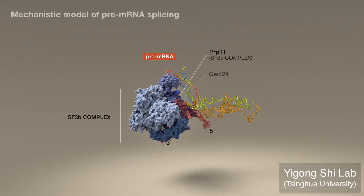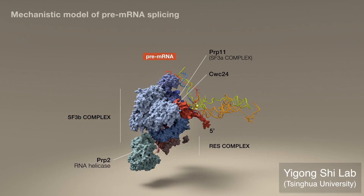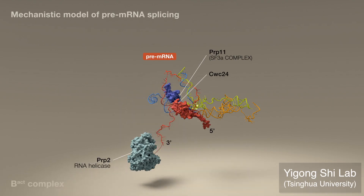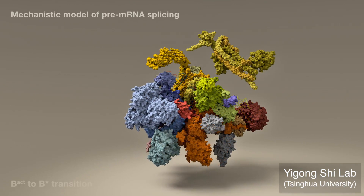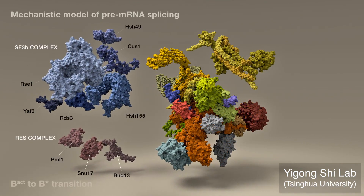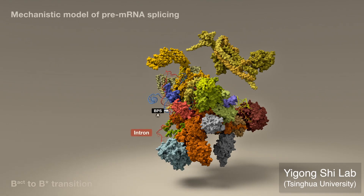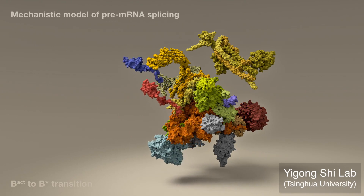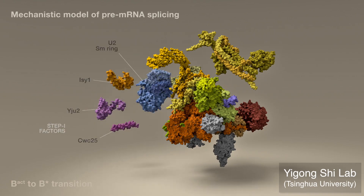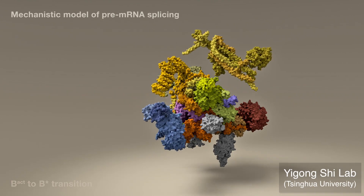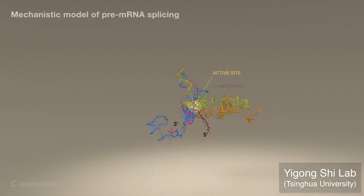Consideration of a mechanistic model of splicing suggests a sequence of events at the level of protein components. Initially, the step 1 branching reaction cannot proceed while the two reactive moieties are separated by a shielded 50-angstrom gap, a structural feature presumably tailored for alternative splicing and selection of branch sites. The RNA helicase PRP2 likely pulls the intron, triggering the release of intron-associated RES and SF3B complexes, the exposure of the BPS nucleophile, and the removal of PRP11 and CWC24, which took part in maintaining catalytic dormancy. Recruitment of step 1 factors enables interactions at the active site which place the nucleophile close to the scissile phosphodiester bond. The branching reaction can proceed, yielding the intron lariat and freeing the 5' exon.